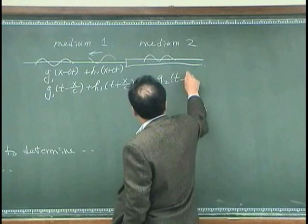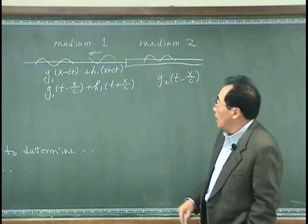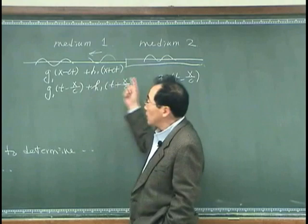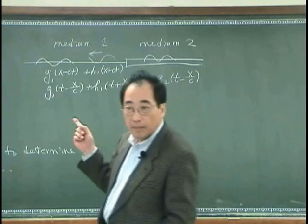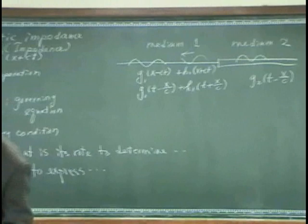And I can express that as G2, T minus x over C. And do you think that this C and this C is the same? No.